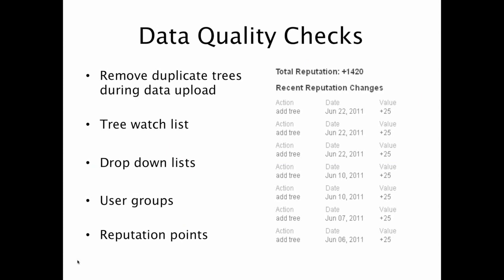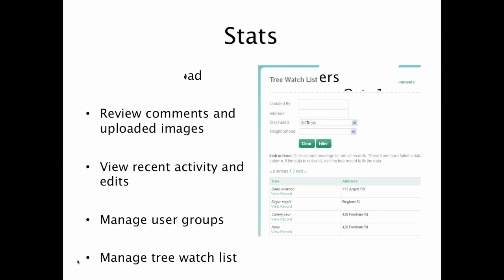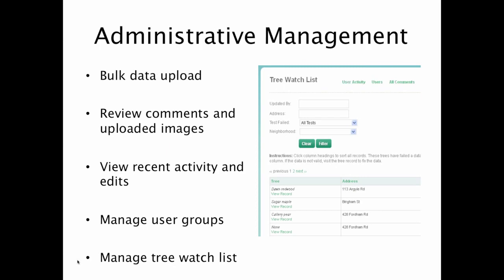We also have a number of data quality checks. Bulk or duplicate trees can be removed during data upload. There are watch lists. We use a series of reputation points where, as people gain experience, they unlock new fields to be able to edit. There is also administrative oversight — not just users running around willy-nilly. Administrators are able to view recent activity, review comments and images that are uploaded, and manage user groups to make sure there is oversight in the system.